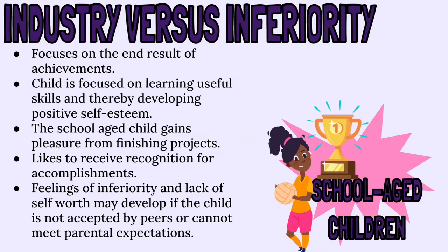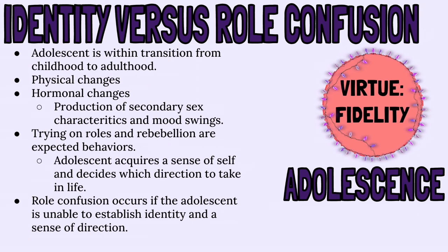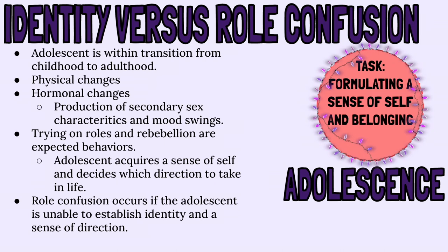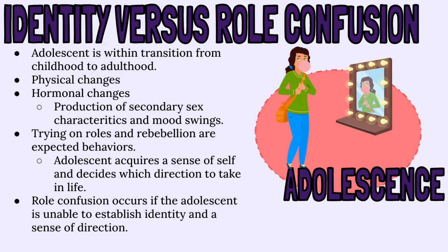Next is identity versus role confusion, the developmental stage for adolescents. The virtue for this stage is fidelity. The task for this developmental stage is formulating a sense of self and belonging. There's a lot going on in this stage because the adolescent is transitioning from childhood to adulthood. They begin to go through many changes, including physical and hormonal changes, which lead to secondary sex characteristics and mood swings. At this age, the child is trying to establish their own identity — as a result, they may try on different roles and begin to rebel. The adolescent acquires a sense of self and decides which direction they want to take in life. If the adolescent is unable to establish an identity and sense of direction, role confusion occurs instead.